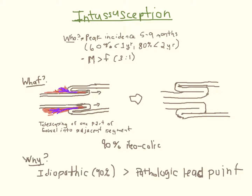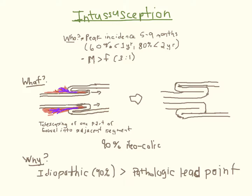90% of the time, the ileum telescopes into the colon, and 90% of the time it is idiopathic. Otherwise, a pathologic lead point for the intussusception is found, either due to intestinal polyps or neoplasms, congenital anomalies like Meckel's, or hemorrhage of the bowel wall.